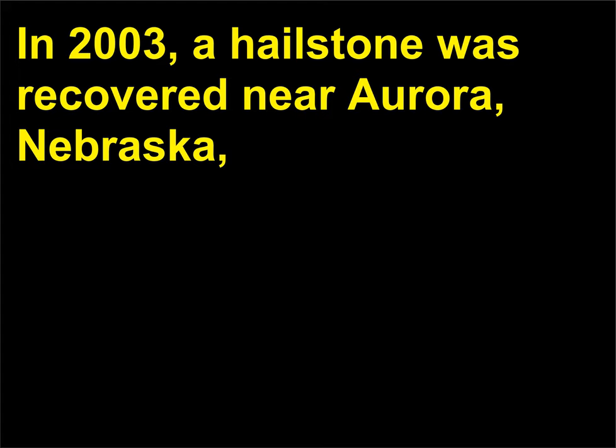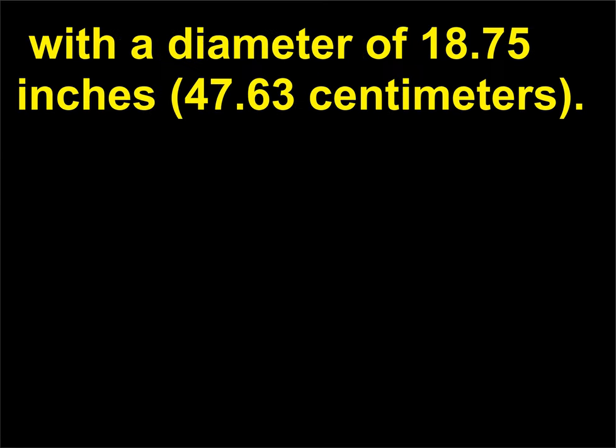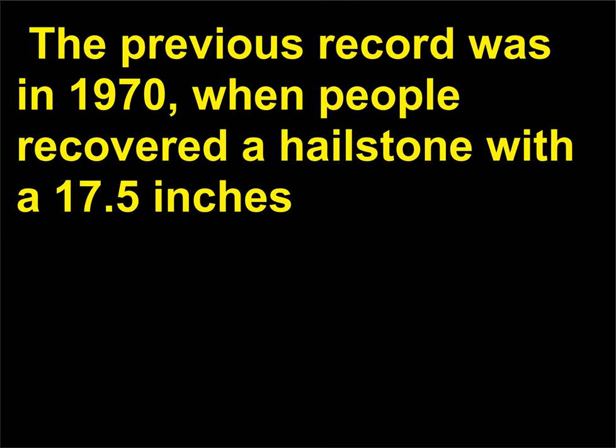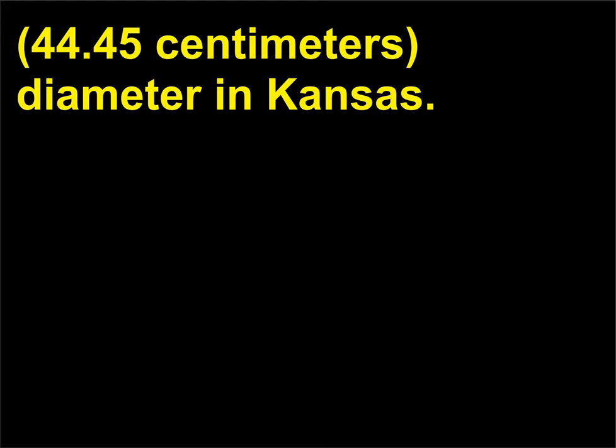In 2003, a hailstone was recovered near Aurora, Nebraska, with a diameter of 18.75 inches (47.63 centimeters). The previous record was in 1970, when people recovered a hailstone with a 17.5-inch (44.45 centimeters) diameter in Kansas.